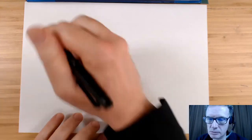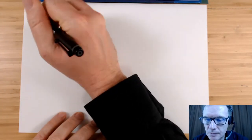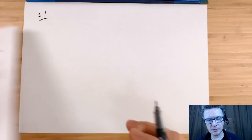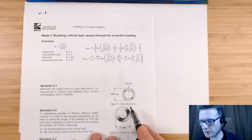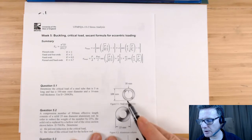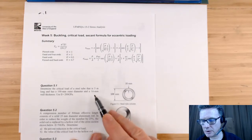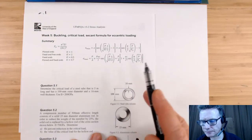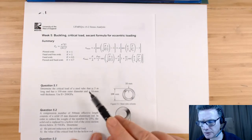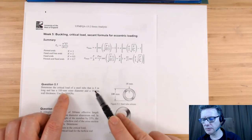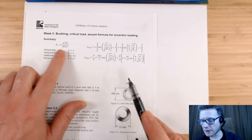Okay, let's start with problem 5.1. The question we've got is a steel column, 500 millimeters diameter, thickness 16, five meters long. And what I've been asked is the critical load.